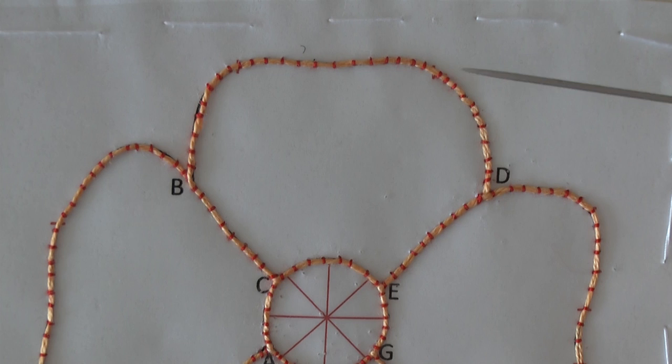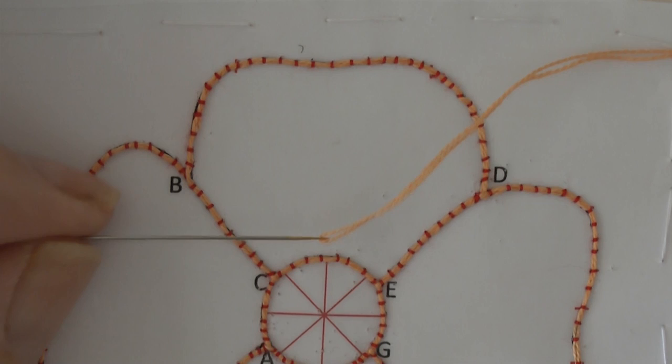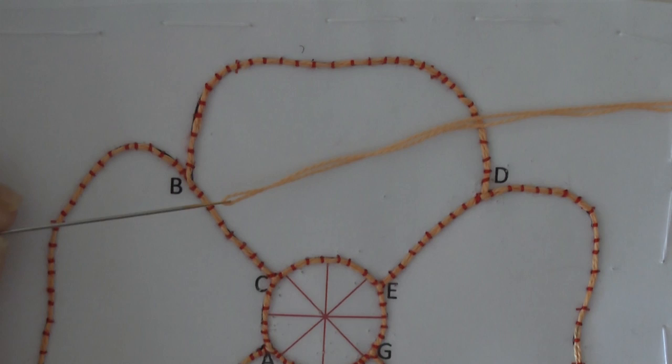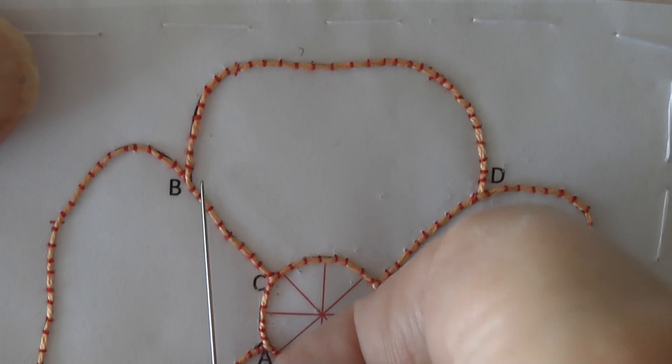You first need to thread up your ballpoint needle with the thread that you're going to use for the filling stitches. To start your filling stitches, you need to run the needle and thread up through the couching stitches on the side.